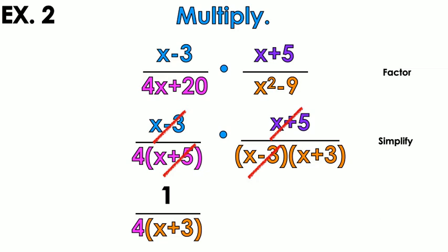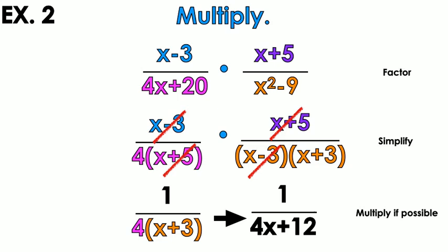So my answer is 1 over 4 times the quantity x plus 3. At the end, if there's anything left over that you can multiply, go ahead and multiply it, giving a final answer of 1 over 4x plus 12. The process is: factor, simplify, rewrite your answer.